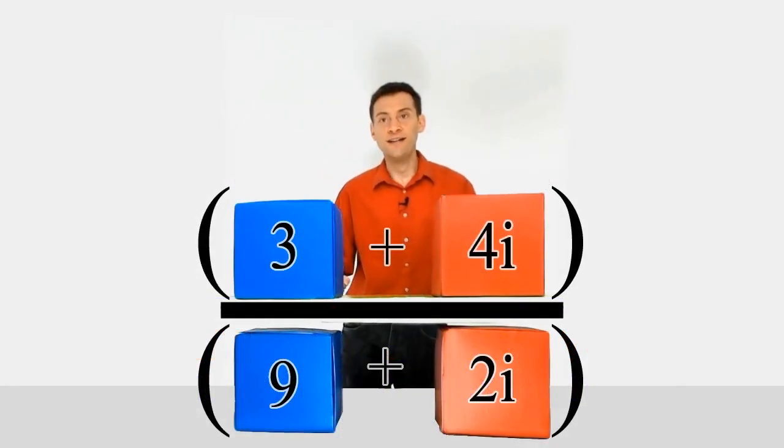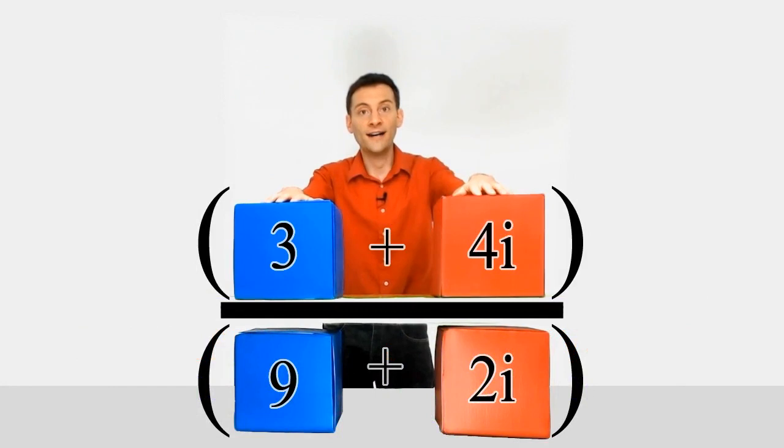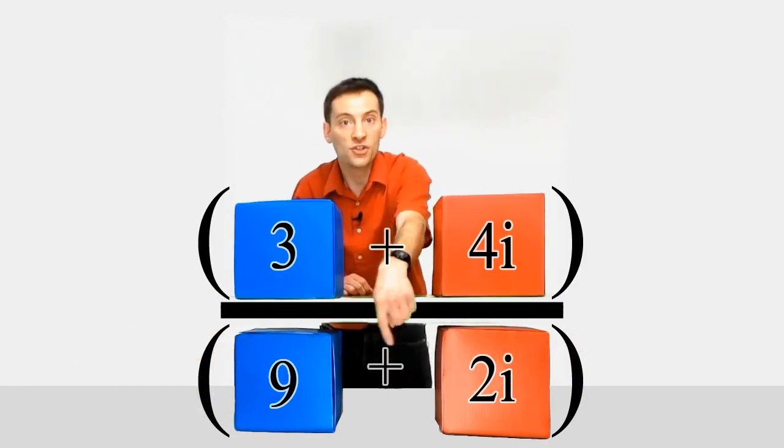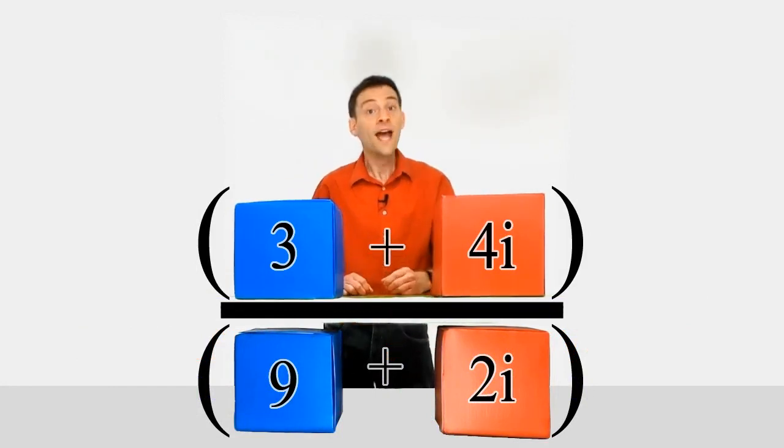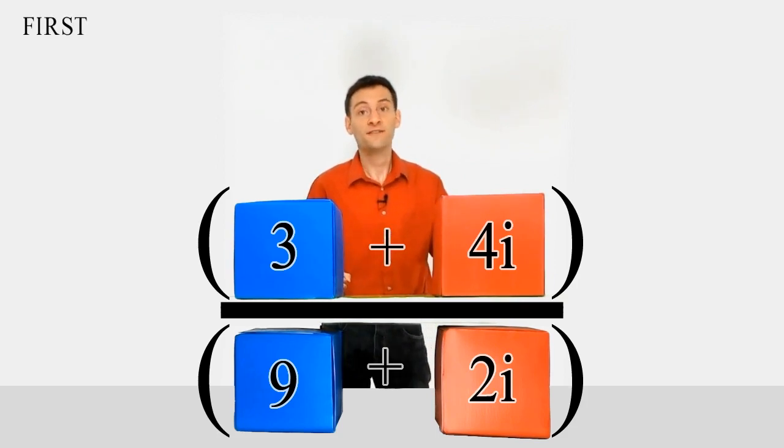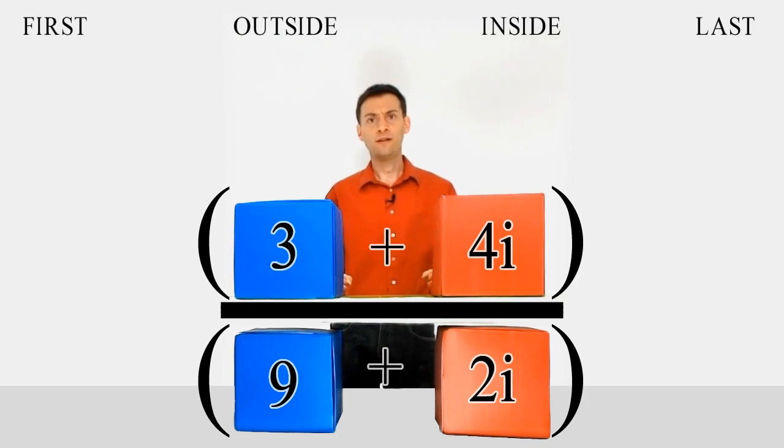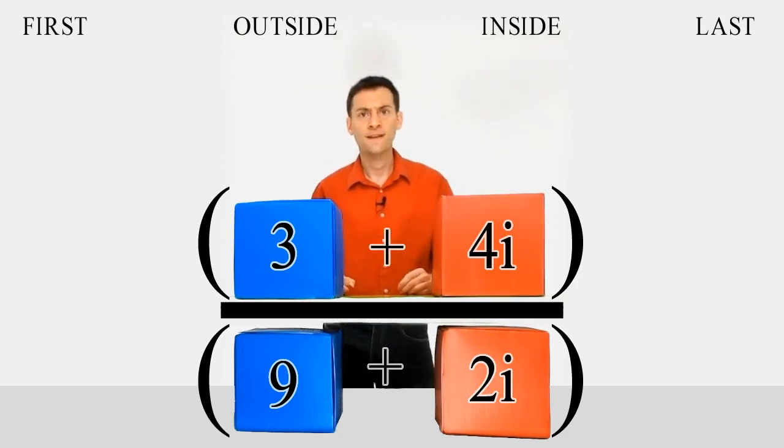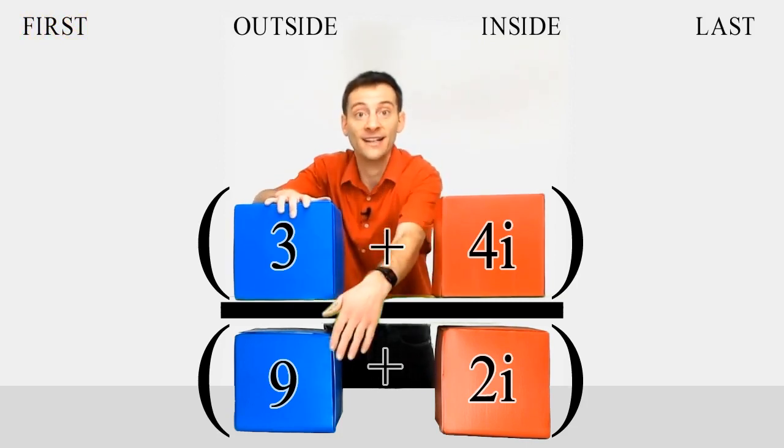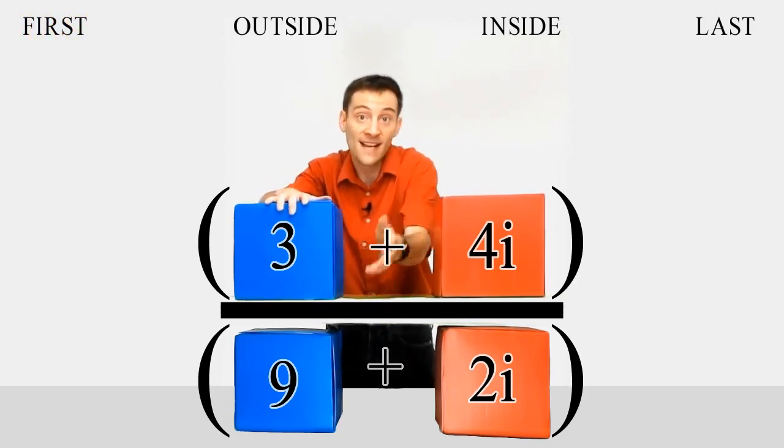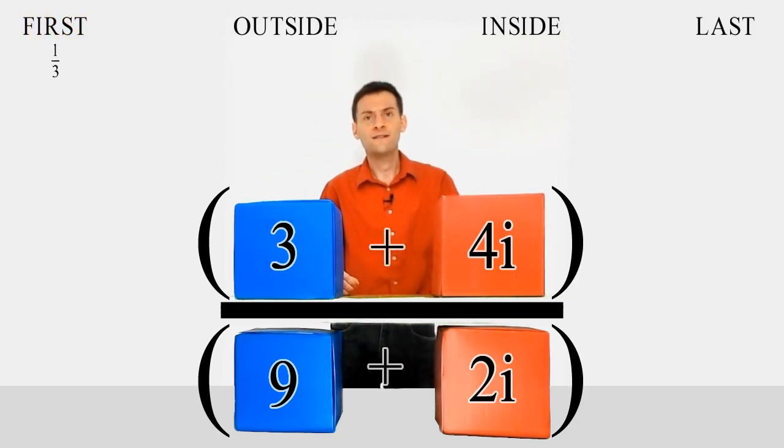Now, let's try to divide 3 plus 4i by 9 plus 2i. How about if we use the FOIL method to divide the numbers? Well, this time we really hit a problem. Look what happens. Dividing the two first terms in the brackets, 3 divided by 9, is no problem, as that simply gives us a third. No, it's the outside terms that are the difficult ones, as look what happens to the i.